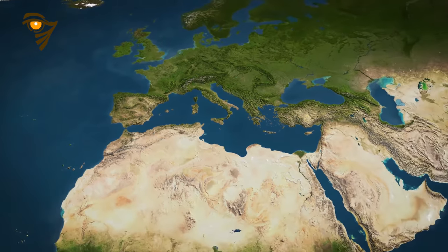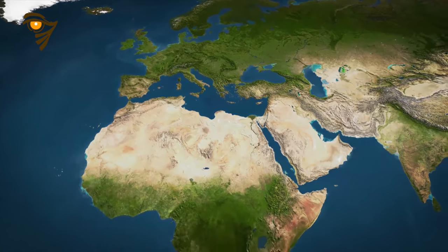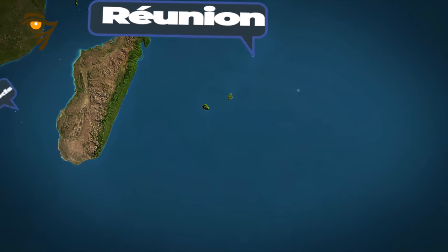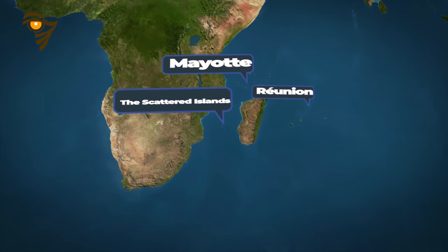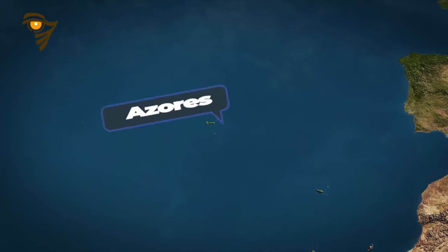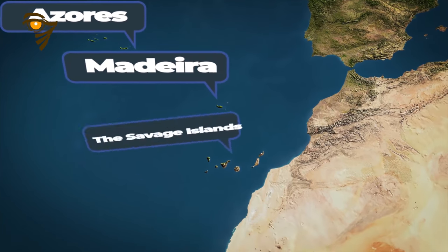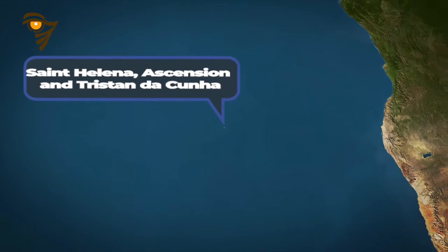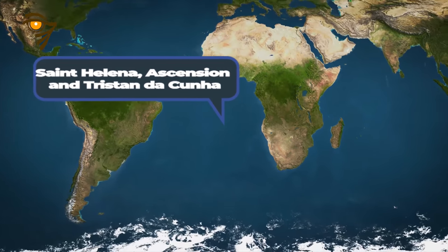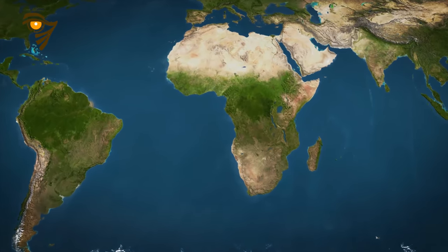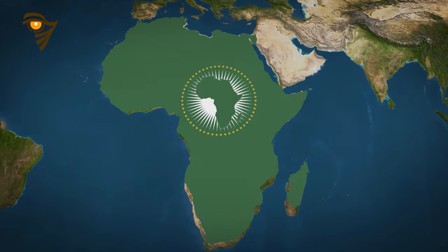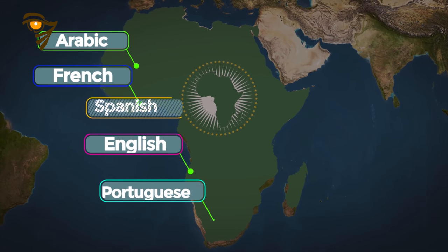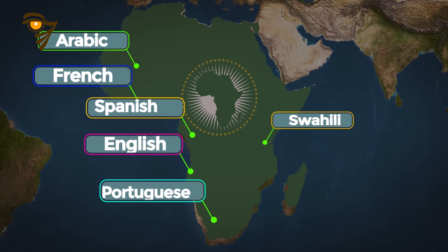In addition, European countries have dependencies among African islands, such as France in Mayotte, Reunion, and Scattered Islands in the Indian Ocean; Portugal with the Azores, Madeira, and the Savage Islands; and the United Kingdom with Saint Helena, Ascension, and Tristan da Cunha. The official languages of the African Union are Arabic, English, French, Portuguese, Spanish, Swahili, and any other African language.